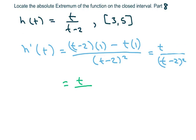It's going to be t minus 2 minus t, so what cancels out are the t's, so you're left with negative 2 over t minus 2 squared.